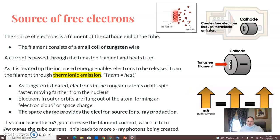The source of free electrons is a filament at the cathode end of the tube. Remember, the cathode end is the negative end. The filament consists of a small coil of tungsten wire. Current is passed through the filament and heats it up. As it's heated, the energy increases and electrons are released.